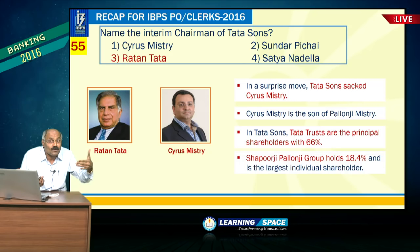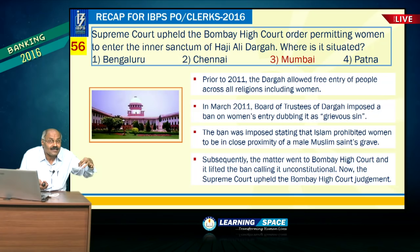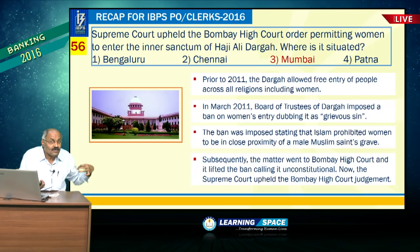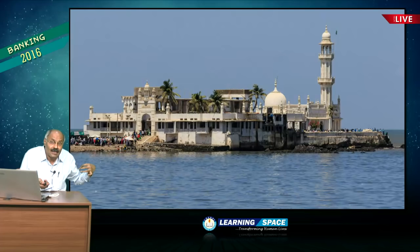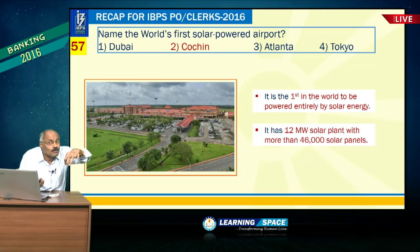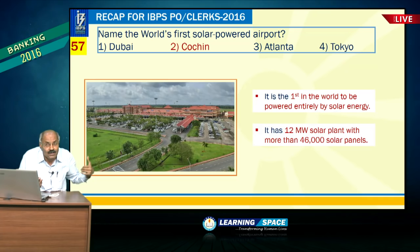Supreme Court upheld the Bombay High Court order permitting women to the inner sanctum of Haji Ali Dargah, located in Mumbai. Kochi International Airport is the world's first solar-powered airport. Recently the Prime Minister also inaugurated Harini Airport in Vadodara — the second solar-powered airport.